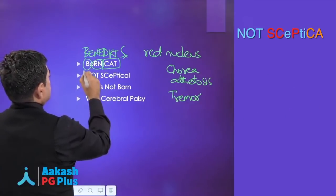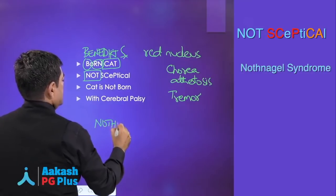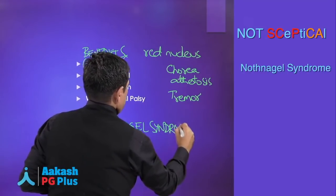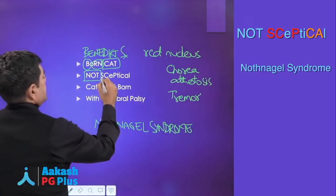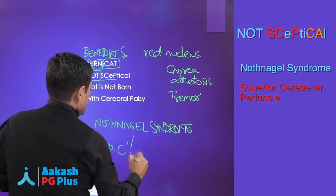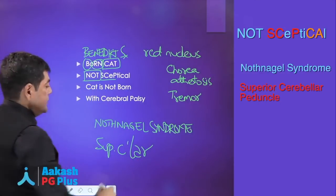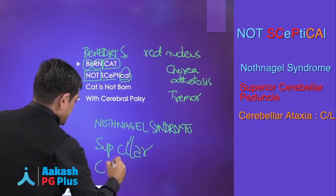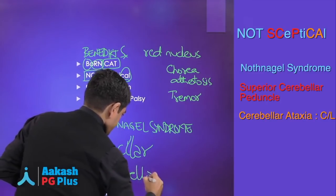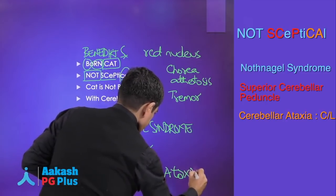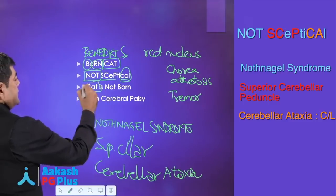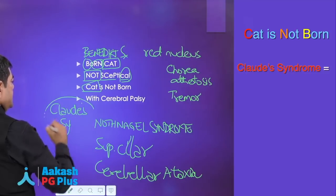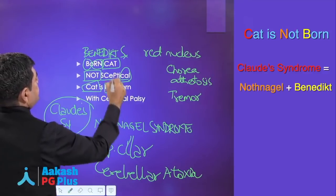That's Benedict syndrome. N is Nothnagel syndrome, and SCP is the superior cerebellar peduncle — not cerebral, superior cerebellar peduncle — with CA, cerebellar ataxia. This is Claude's syndrome, which is a combination of Nothnagel and Benedict syndromes.